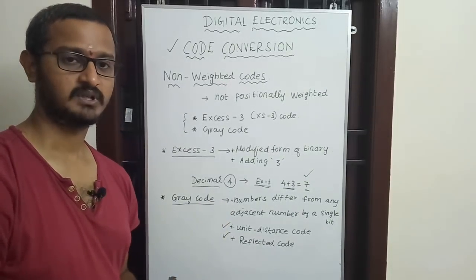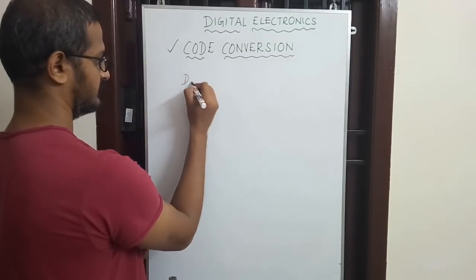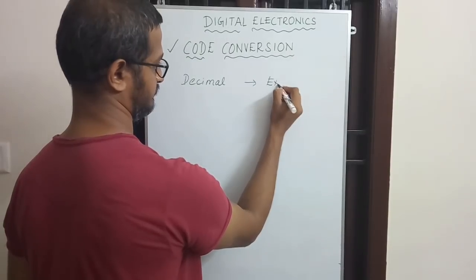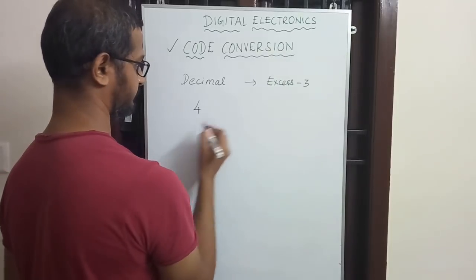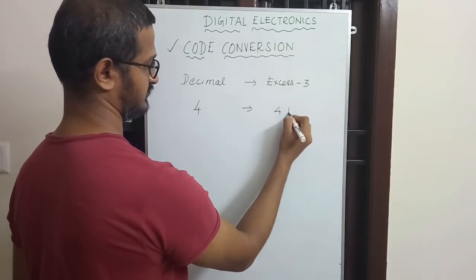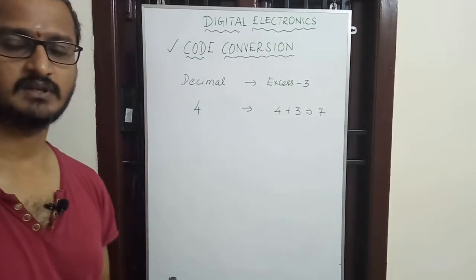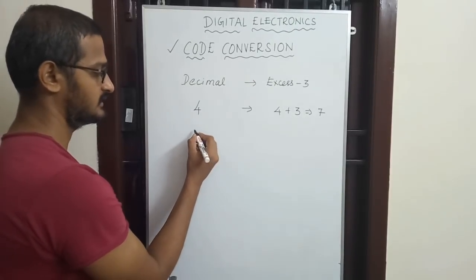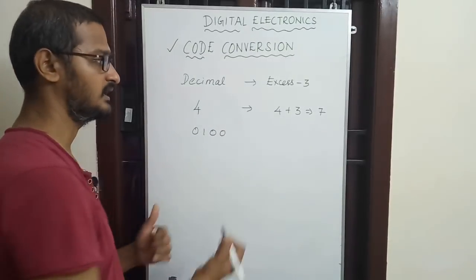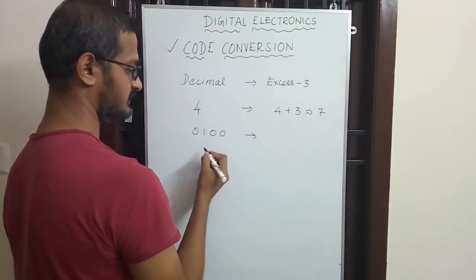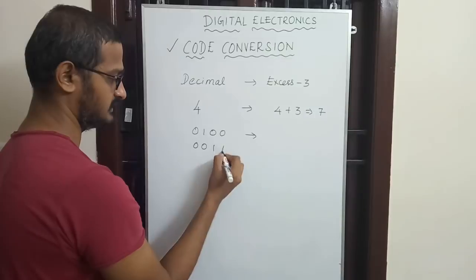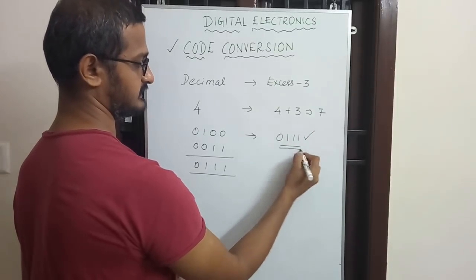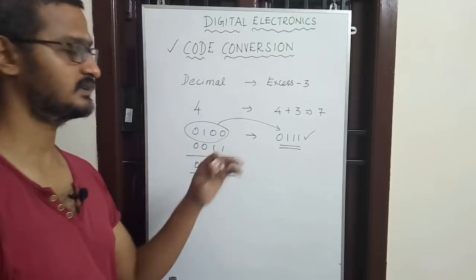Gray code is also called unit distance code or reflected code. Adjacent numbers in Gray code differ by only a single bit. For example, to convert decimal 4 to XS3: 4 plus 3 equals 7, and 7 in binary is 0111, so the XS3 answer is 0111.